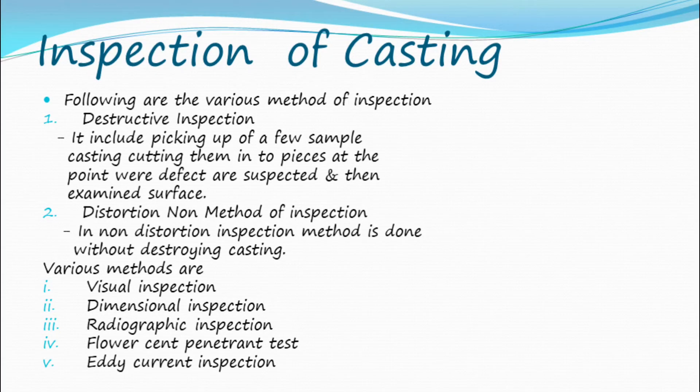Inspection of casting: the following are the various methods of inspection. Destructive inspection: this includes picking up a few sample castings, cutting them into pieces at the points where defects are suspected, and then examining the surfaces. Non-destructive inspection: this method is done without destroying the casting.